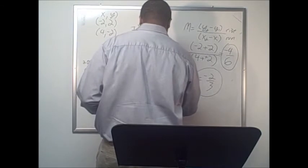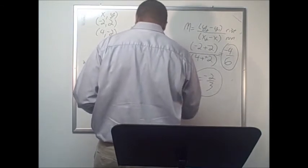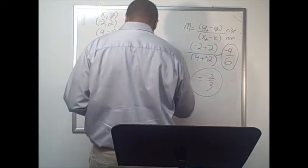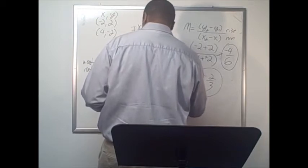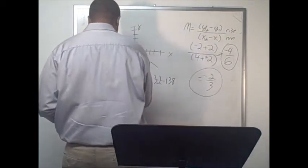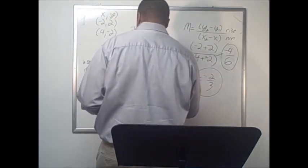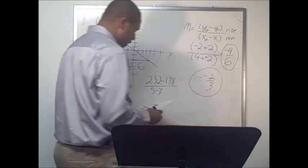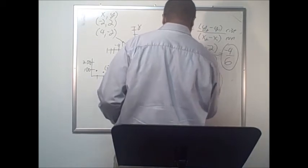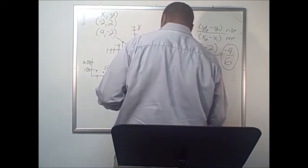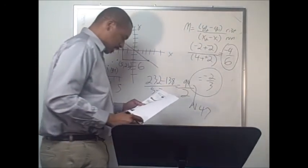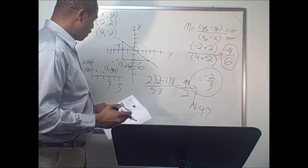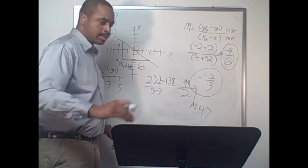Using y2 and y1, and x2 and x1 from the slope formula: we take 232 minus 138 — sorry, it's actually 138 — and then x2 minus x1, which is five minus three. That gives us 94 divided by 2, which is 47. So 47 is the answer: the rate of change in attendance between these two games is 47 people per game.